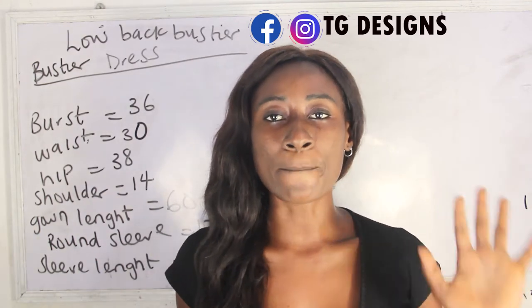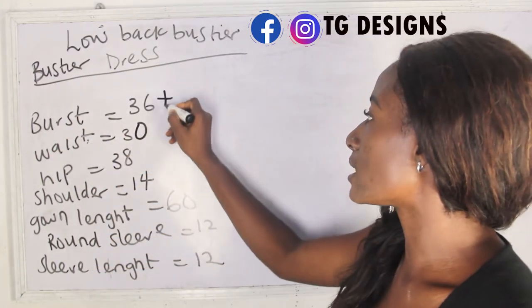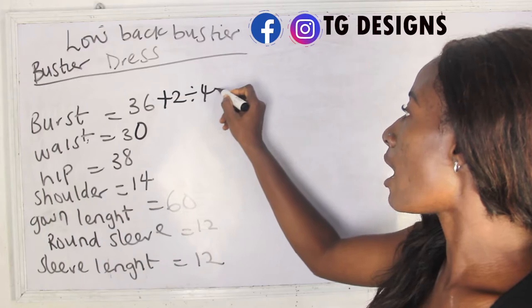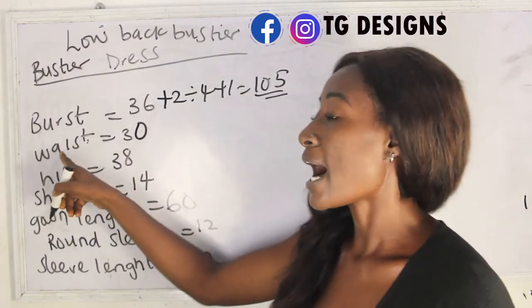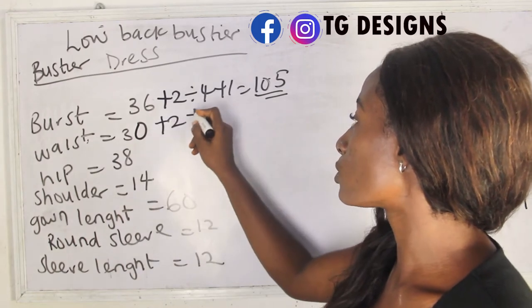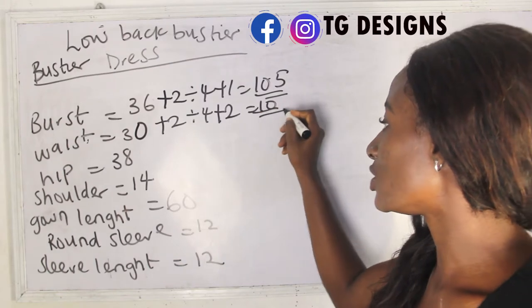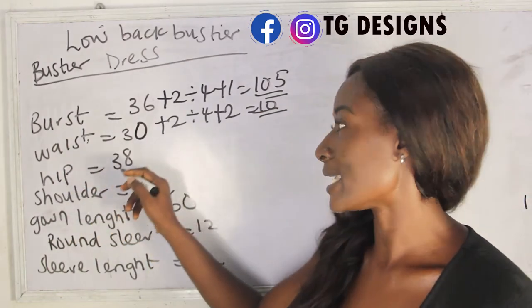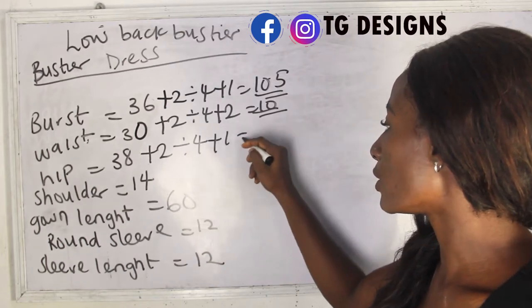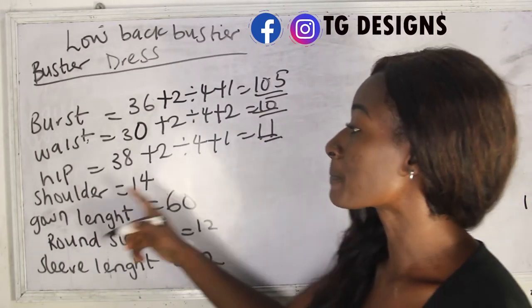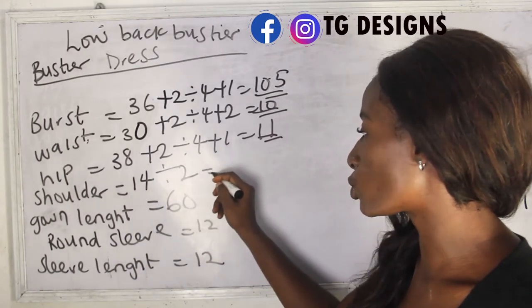Let's go ahead and calculate our basic measurements. Our bust measurement is 36: 36 plus 2 divided by 4, plus 1 = 10.5 inches. Our waist is 30: 30 plus 2 divided by 4, plus 2 = 10 inches. Our hip is 38: 38 plus 2 divided by 4, plus 1 = 11 inches. Our shoulder measurement is 14 divided by 2 = 7 inches.